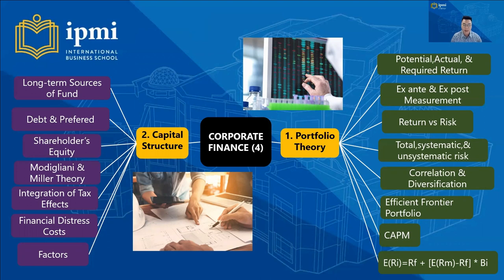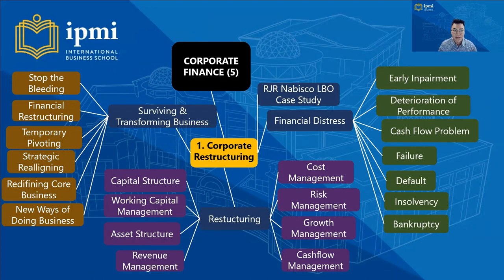Part four of the mind mapping covers portfolio theory and capital structure. In portfolio theory, we discuss potential, actual, and required return; ex-ante and ex-post measurement; return versus risk; total, systematic, and unsystematic risk; correlation and diversification; efficient frontier portfolio; CAPM and the CAPM equation. Capital structure covers long-term sources of funds, debt and equity, Modigliani and Miller theory, integration of tax effects, financial distress cost, and factors of capital structure.